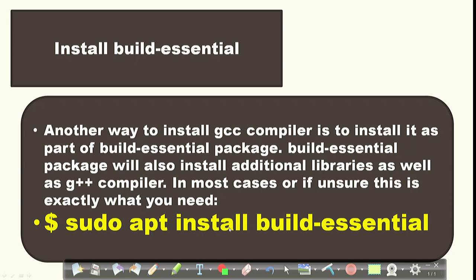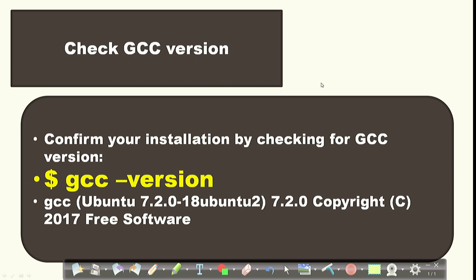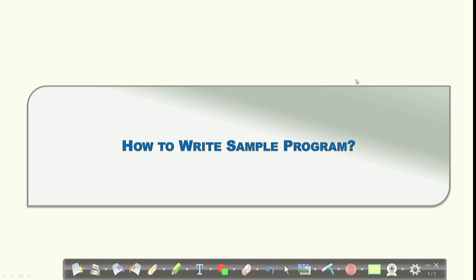Using the build-essential method, open the terminal and type: sudo apt install build-essential. This installs GCC plus the G++ compiler and additional libraries. After installation, check whether the compiler is properly installed by typing: gcc --version. It will display the version of GCC installed on your system. These are the steps to install a compiler on Ubuntu.